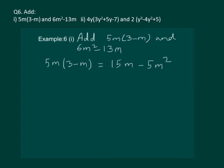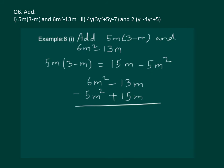Now, we have to add 15m minus 5m squared with 6m squared minus 13m. We can see the like terms: 6m squared minus 5m squared, and minus 13m and 15m. Collecting the like terms together, we will get m squared plus 2m, which is the required answer. m squared plus 2m is the sum of the 2 algebraic expressions.